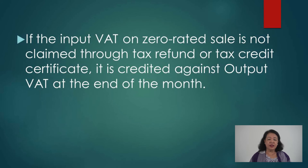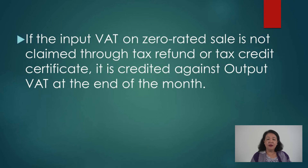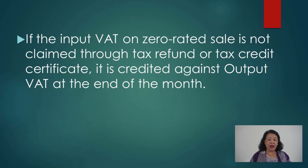If the input VAT on zero-rated sales is not claimed through tax refund or tax credit certificate, it is credited against output VAT at the end of the month — especially if, aside from the zero-rated activity, the business also has transactions subject to regular VAT. In that case, the input tax from the zero-rated sale can be applied against the output tax payable on the other line of business activity.